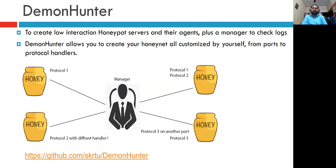The next tool is Demon Hunter, used to create low-interaction honeypot servers along with their agents and managers. Demon Hunter allows you to create your own honey net, fully customized — from ports to protocol handlers. You can use your own ports and protocols; it is not compulsory to use the same protocol everywhere. For example, one honeypot can use TCP, another HTTP, and another FTP. Any protocol and any port number can be used anywhere.